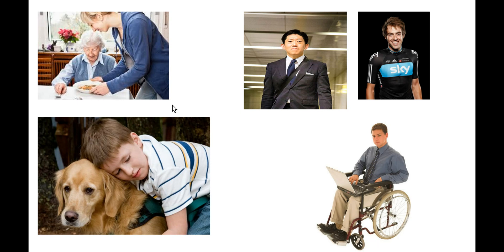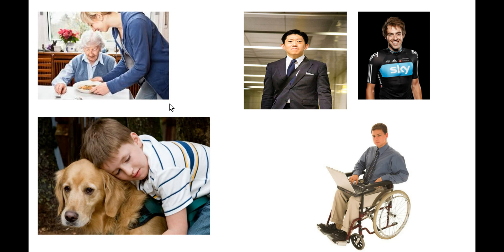Each of these images holds something behind them. The man down in the corner on his laptop is confined to a wheelchair — he's lost the use of his legs. Up in the top corner, our cyclist actually suffers from a genetic condition called hemophilia, so his blood isn't able to clot as easily as those who don't have hemophilia. Our elderly woman at the top, while she looks outwardly very healthy, suffers from Alzheimer's — a degenerative disorder of the brain which causes people to lose memory very easily, forgetting people and how to carry out simple daily functions.